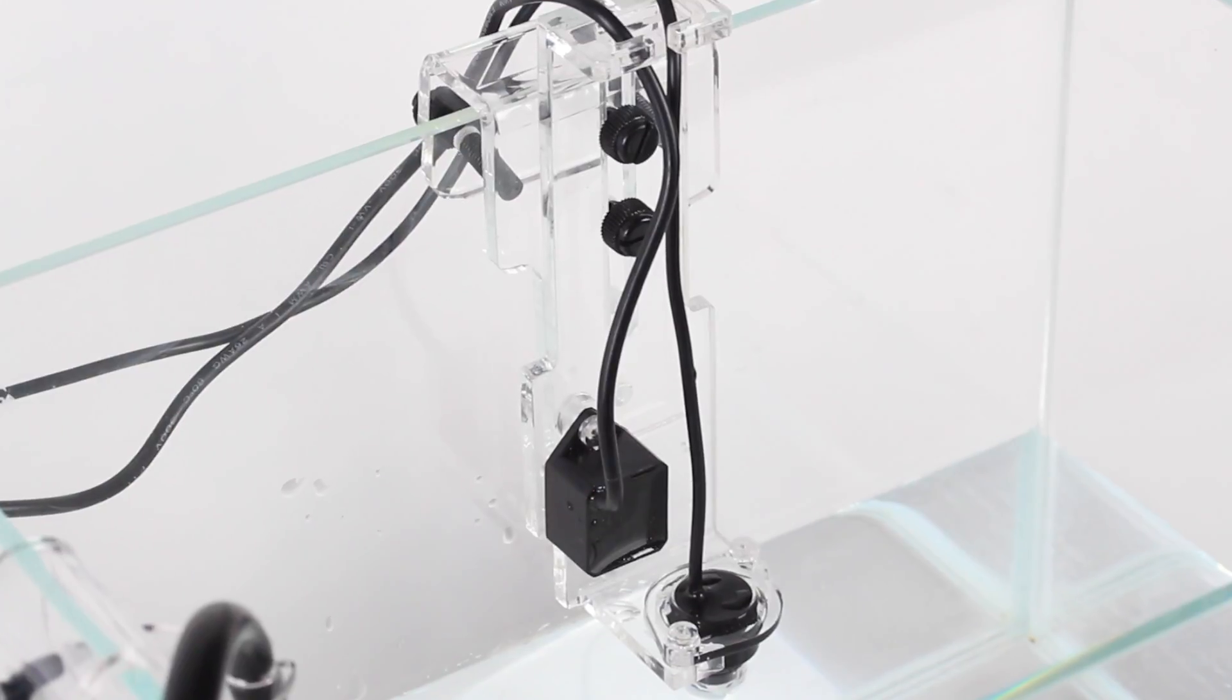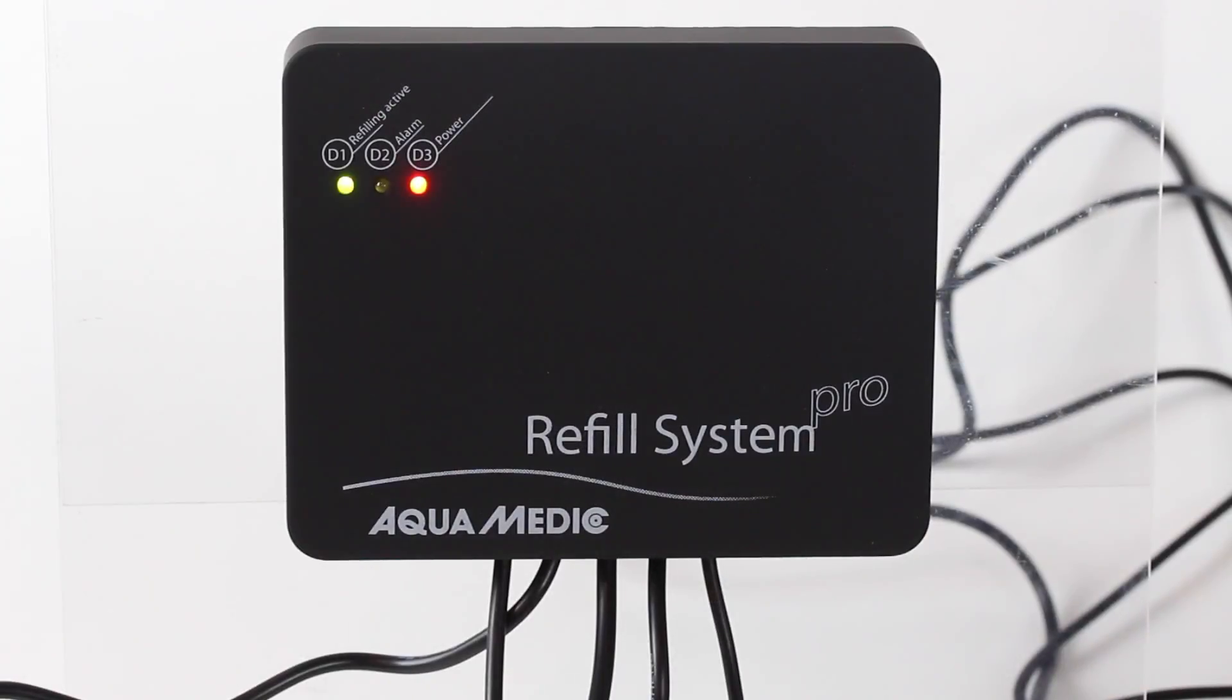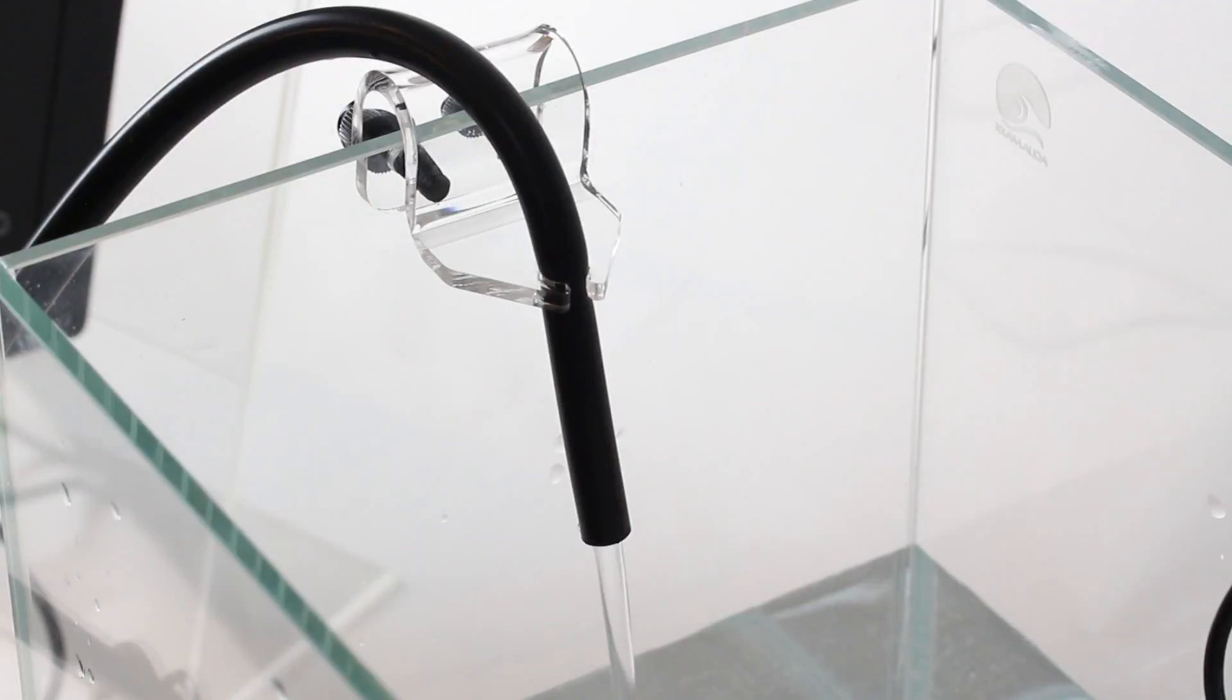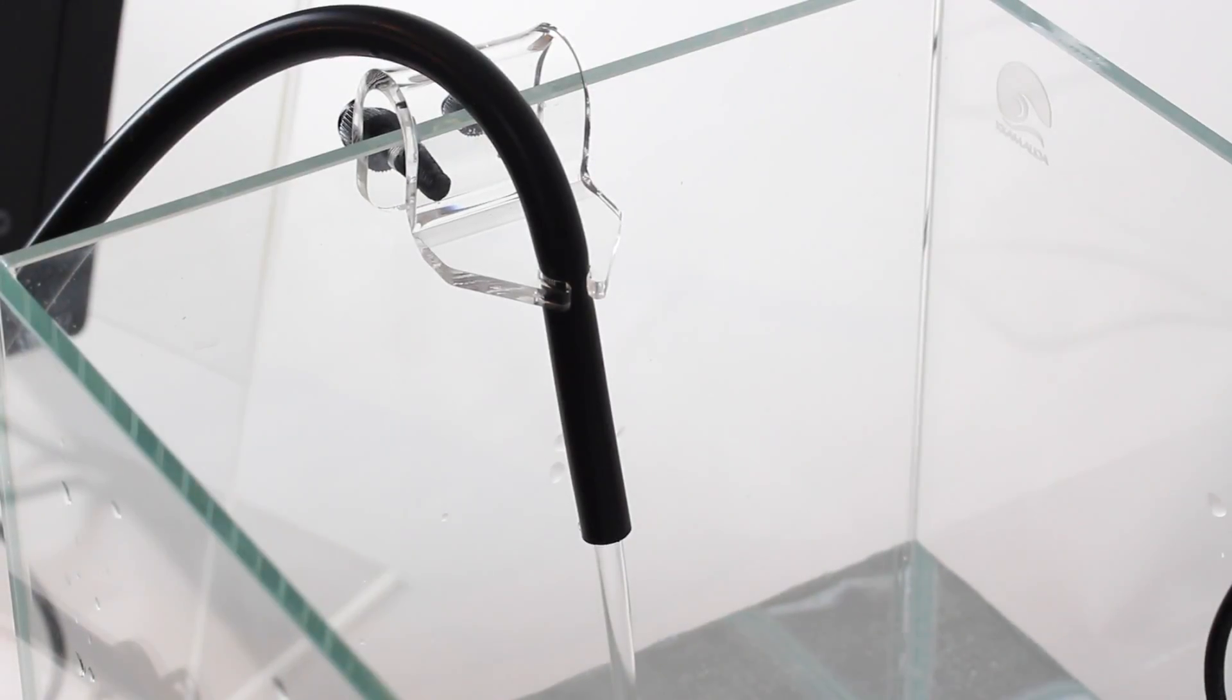When the water level drops in your tank due to evaporation, the sensor switches on a small water pump inside a reservoir that will pump fresh water into your aquarium. When the water level reaches the desired height, the pump is then switched off.